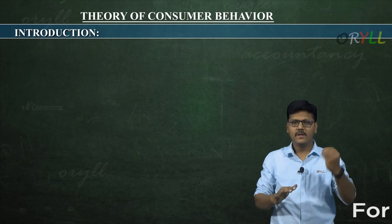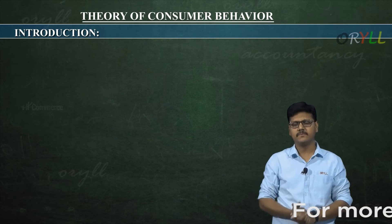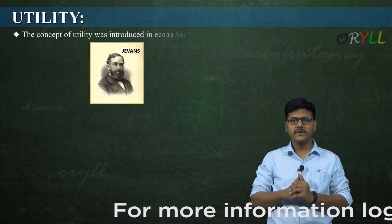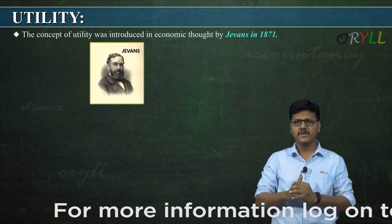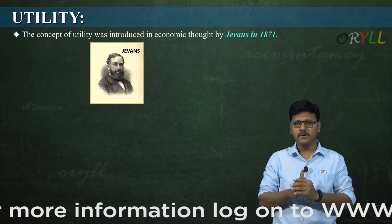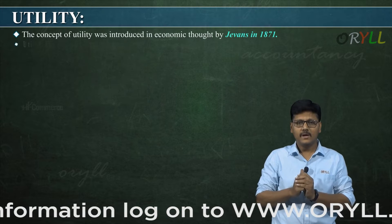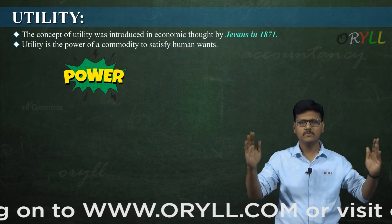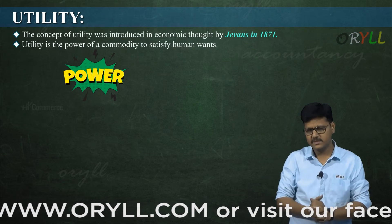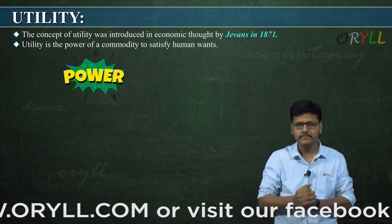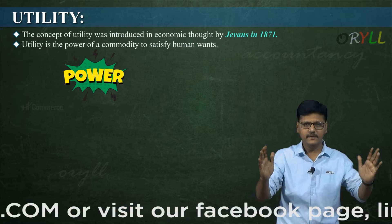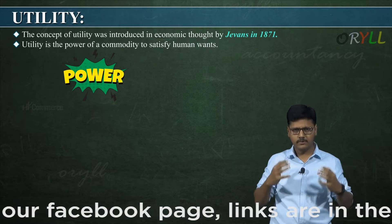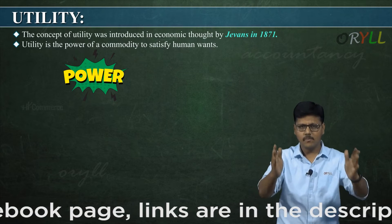In all these concepts we study about utility and consumption. First, what is utility? The concept of utility was introduced in economics by Jevons in 1871. Utility means it is the power of a commodity to satisfy human wants. When a commodity has the capacity or power to satisfy human want, it means that the commodity has utility.